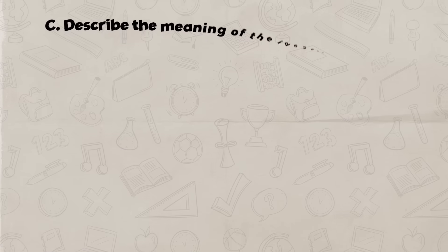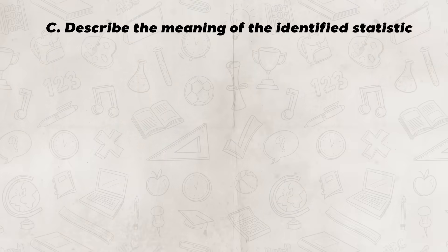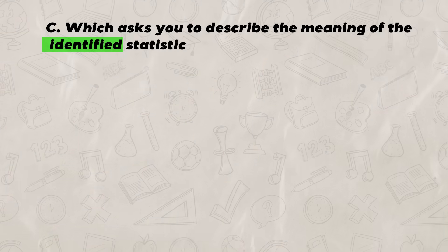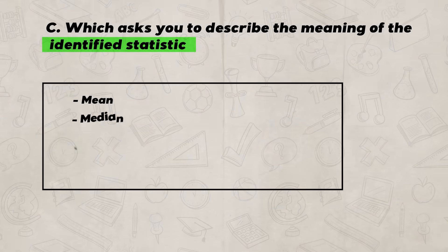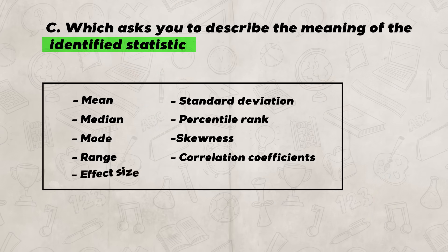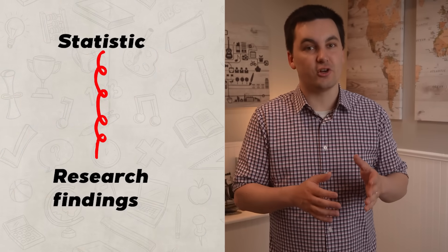Up next is Part C, which asks you to describe the meaning of the identified statistic. The AAQ can ask you about the mean, median, mode, range, standard deviation, percentile rank, skewness, correlation coefficients, effect size, or statistical significance — so make sure you are familiar with all of those. When answering Part C, remember the task verb is 'describe,' so you cannot just identify the statistic. Your answer needs to show how the statistic connects with the research and demonstrate that you understand what the statistics mean in the context of the research.